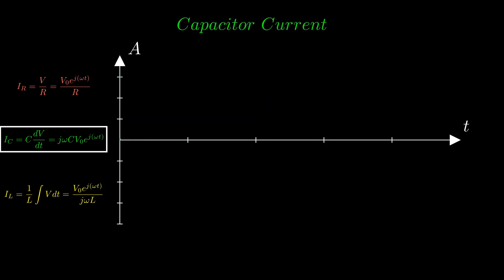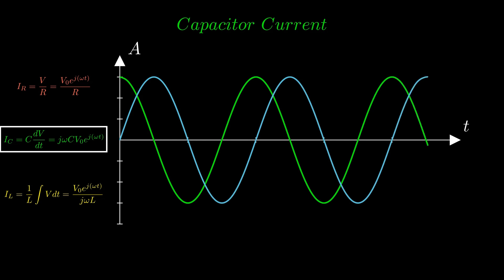Given the j term found in the capacitor equation, we can now conclude that current leads voltage in a capacitor. This is due to a capacitor's tendency to resist sudden change in voltage.